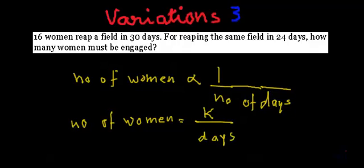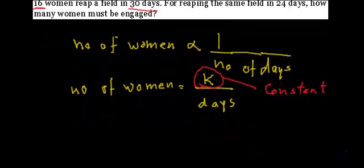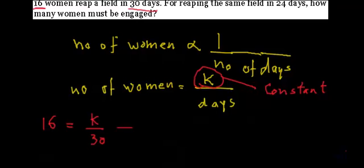So we can write the formula: number of women equals k divided by number of days, where k is a constant. I believe in reducing calculation, so we will try not to find the value of k. Now let's substitute the values from the first case — 16 women reap a field in 30 days — into the formula: 16 equals k divided by 30. Let's call this equation number 1.